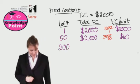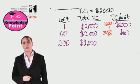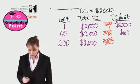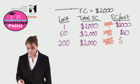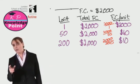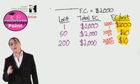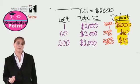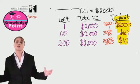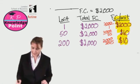Let's do one more. We increase our level of activity again to 200 units. Total fixed costs remain unchanged, and our fixed cost per unit will be $2,000 divided by 200, which gives us $10. Can you see the pattern? As our level of activity increases, our fixed cost per unit will decrease. Even though our fixed costs stay the same in total terms, if we increase our level of activity, we are spreading that cost across more units, so our fixed cost per unit goes down.